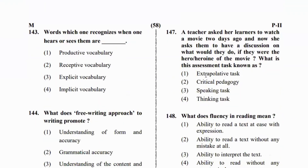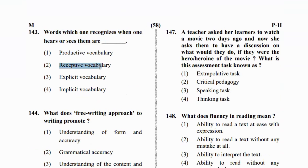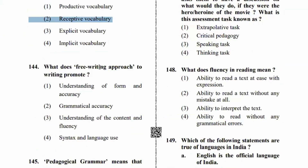Next question: words which one recognizes when you hear or see them — words the child knows but is not producing, only receiving. What are these called? They are not productive vocabulary. Since the child is receiving rather than producing, we call this receptive vocabulary.